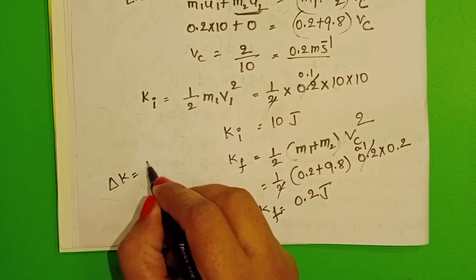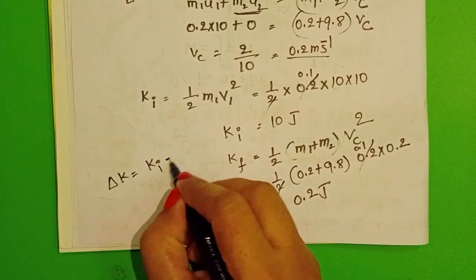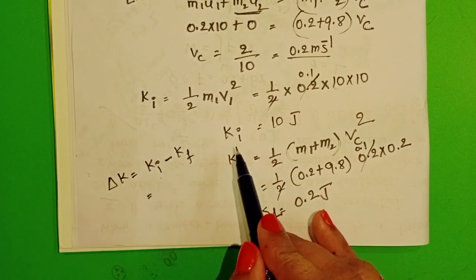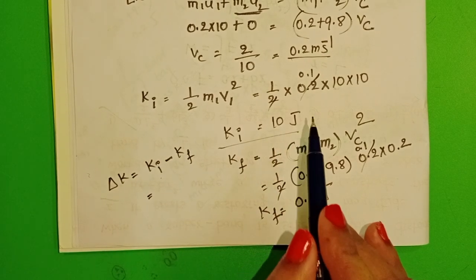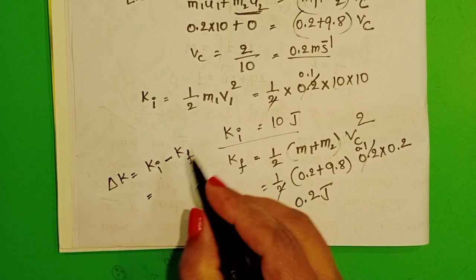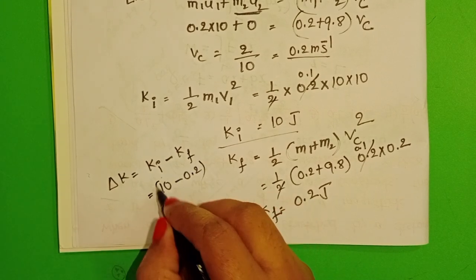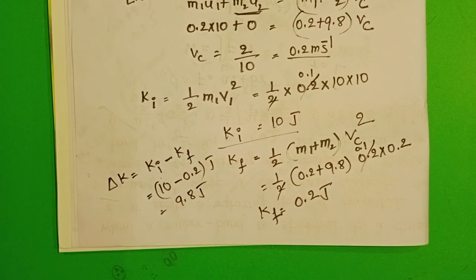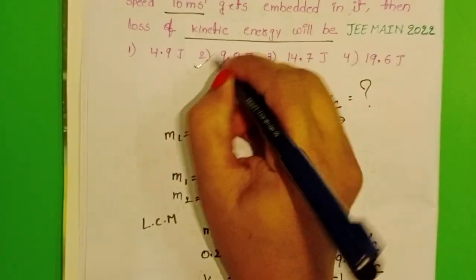We have to find out the change in kinetic energy. Initial kinetic energy minus final kinetic energy. Because here, initial kinetic energy of the bullet is greater than the final kinetic energy. 10 minus 0.2 equals 9.8 joules. Check the options. Second option is correct.